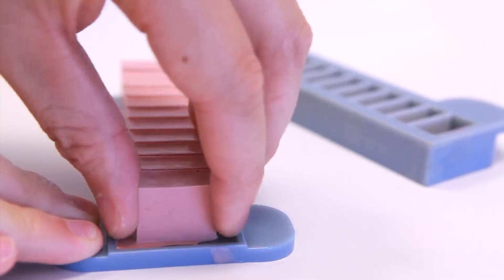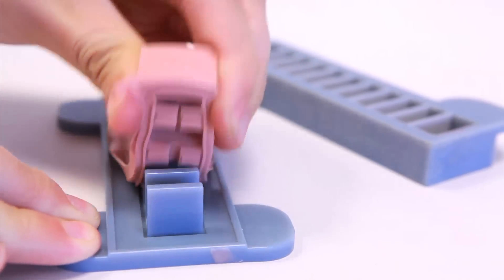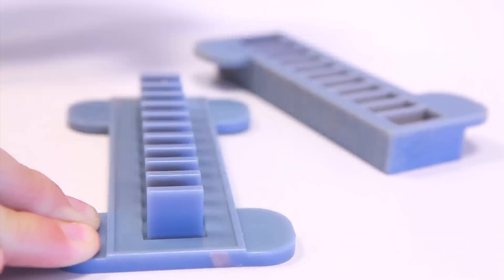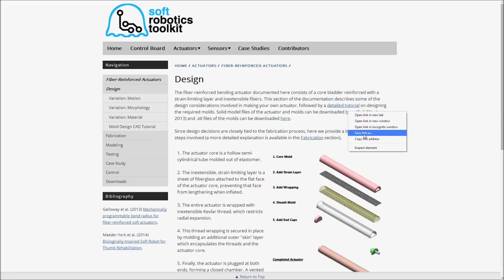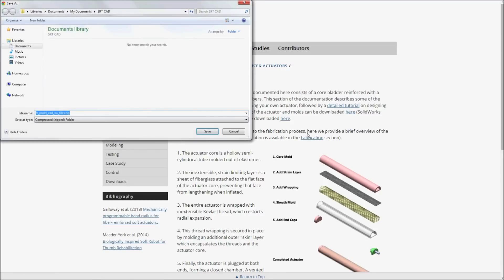Soft robots can be built by casting silicone rubbers in 3D printed molds. The toolkit contains mold CAD files that can be downloaded and modified.